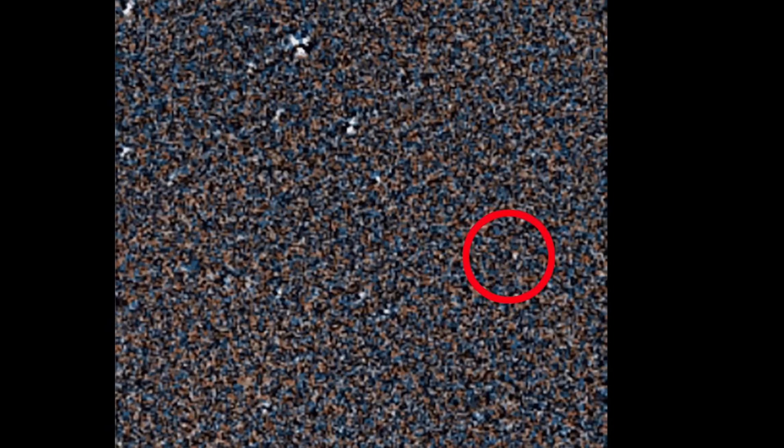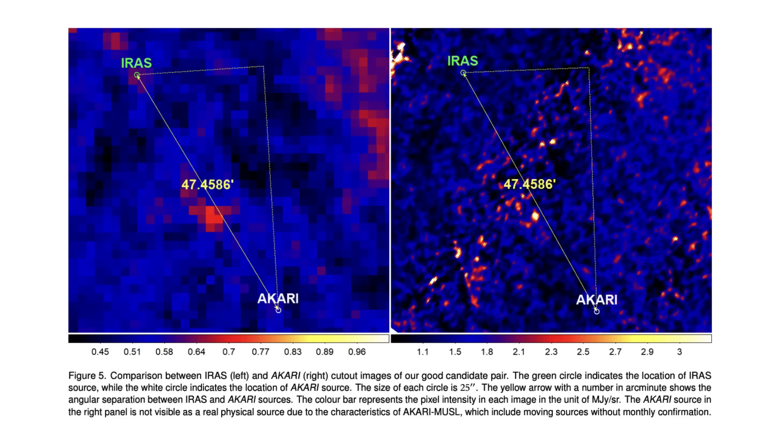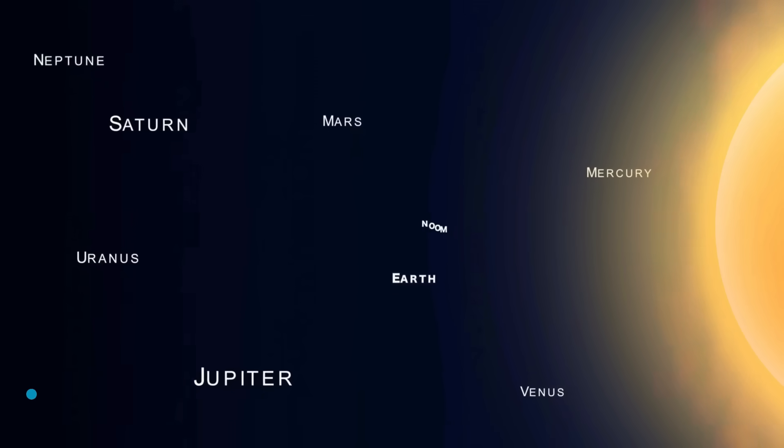It's just a tiny speck, a faint dot hidden in old telescope data from two sky surveys taken 23 years apart. And yet, this faint dot might be one of the biggest discoveries of our time. Because if this turns out to be what scientists think it is, it could be the long-rumored Planet 9.